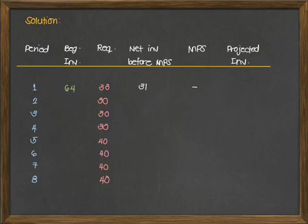MPS is blank or zero because we only give a value to the MPS column if your net inventory before MPS becomes negative — meaning the requirement is larger than your beginning inventory for that particular period. So for period 1, our projected inventory is 31, which will be carried over to period 2 as the beginning inventory.